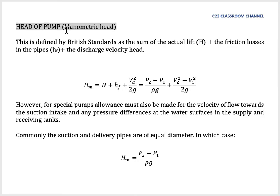It's also called manometric head. This is defined by British standard as the sum of the actual lift head H, plus the friction losses in the pipe hf, plus the discharge velocity head. It can be written as H_m, the manometric head, is the total head of actual head plus the friction loss in pipe plus the discharge velocity head. It also can be written as H plus hf plus V2 squared over 2g, which equals P2 minus P1 over rho g, plus V2 squared minus V1 squared over 2g. We could get this from the Bernoulli equation.